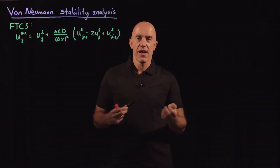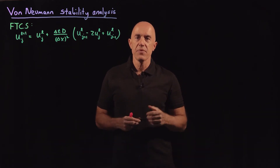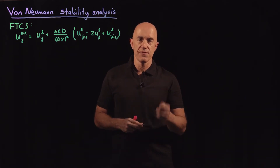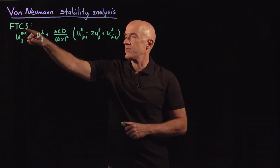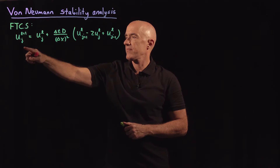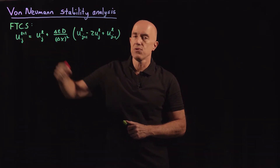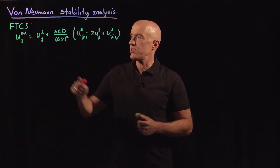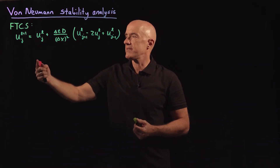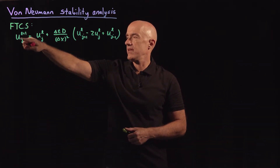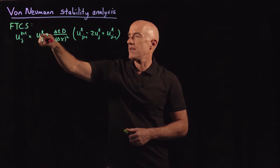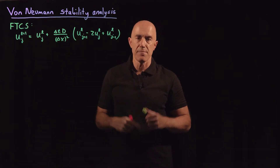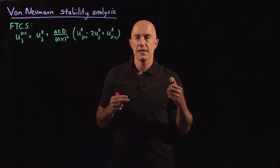We're trying to develop a numerical scheme for the one-dimensional diffusion equation. We developed the forward time centered space (FTCS) scheme for U, where U is a solution of the diffusion equation. This is an explicit scheme because the value of U on grid point J at time step L+1 depends only on the value of U at time step L.